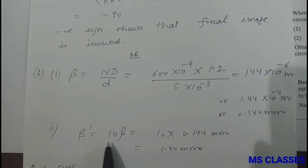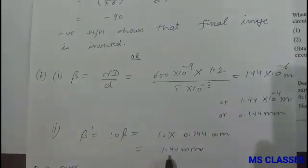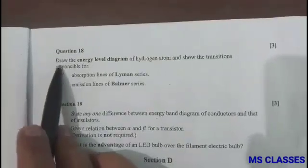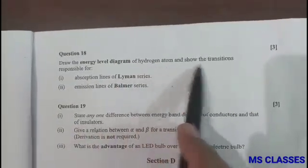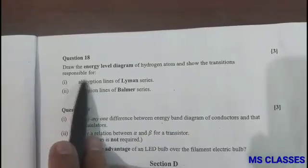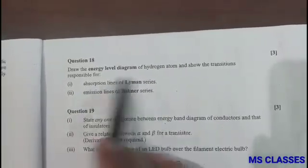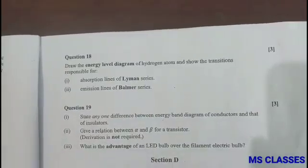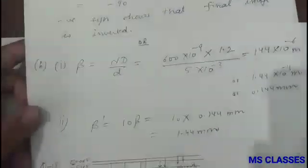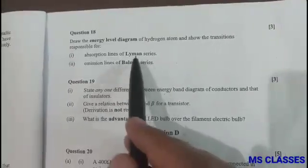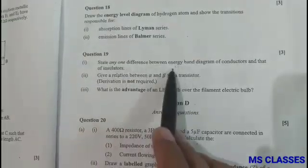And the distance from the center of the 10th fringe is 10 beta which is 1.44 millimeter. Question 18: Draw the energy level diagram of the hydrogen atom and show the transition responsible for the absorption lines of Lyman and emission lines for Balmer. So for that you can refer your textbook and you can just get a rough idea about this rough diagram, but you can get the exact picture from your textbook. Question 19: State any one difference between energy band diagram of conductor and that of insulator.